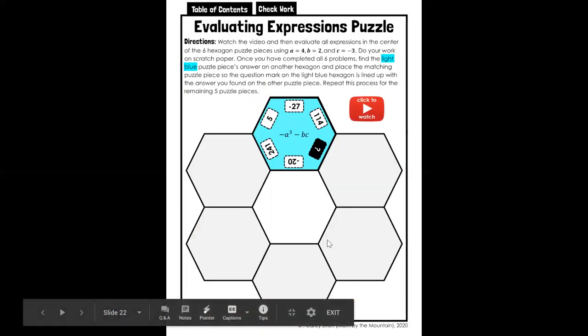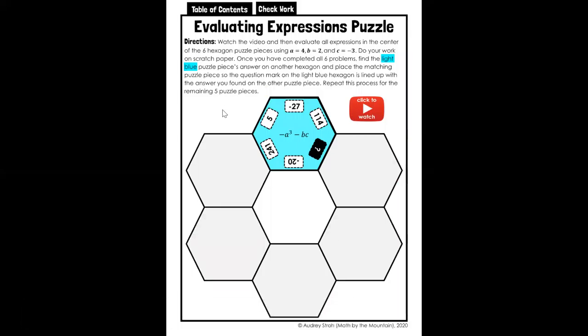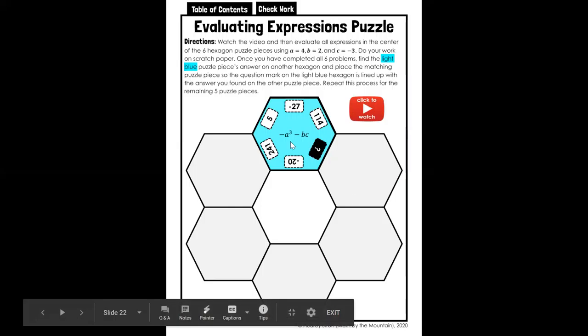When you finish that, you're going to do this evaluating expressions puzzle. Again, there's a short video to watch. Evaluate the expressions in the center of the six hexagon puzzle pieces. A is going to equal four, b will equal two, and c will equal negative three. So you're going to substitute those in here and you'll see what happens. You'll repeat this process for the remaining puzzle pieces. This will drag off and you'll see how this works once you start doing it.